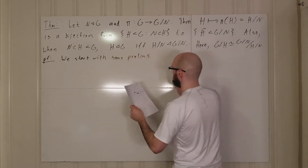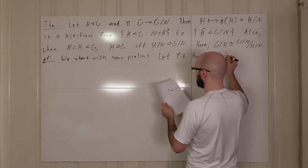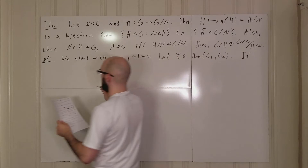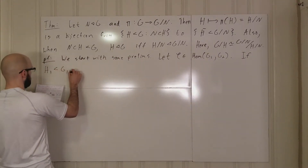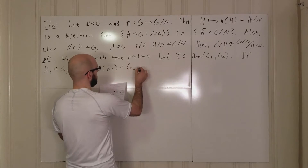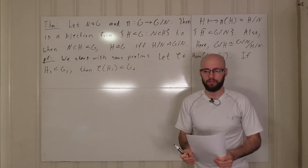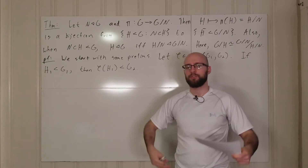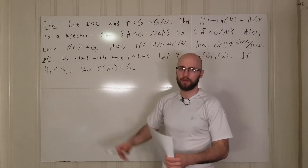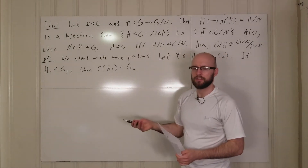Let φ be a homomorphism from a group G₁ to G₂. If H₁ is a subgroup of G₁, then φ(H₁) is a subgroup of G₂. This is not obvious but when mathematicians say something is obvious or trivial, what that really means is that there are no real tricks — it's just something that if you go ahead and do the first or second thing that comes to mind, it'll work.